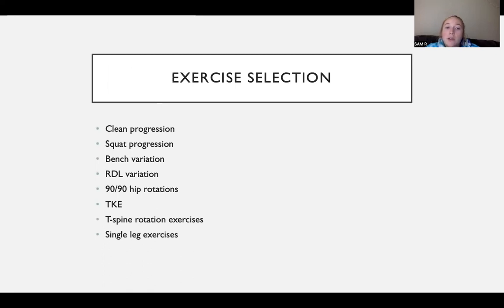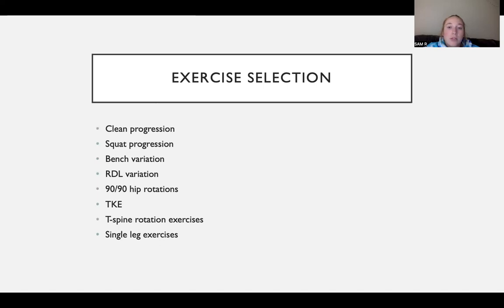Exercise selection includes a clean progression, squat progression, bench variation, and RDL variation as the four main movements, progressing throughout the off-season. Popular mobility exercises include 90-90 hip rotations for hip mobility and ligament strengthening, TKEs for knee stability, and T-spine rotation exercises for core stability and mobility. A lot of single-leg exercises are incorporated because during the race, athletes are on one leg the majority of the time.